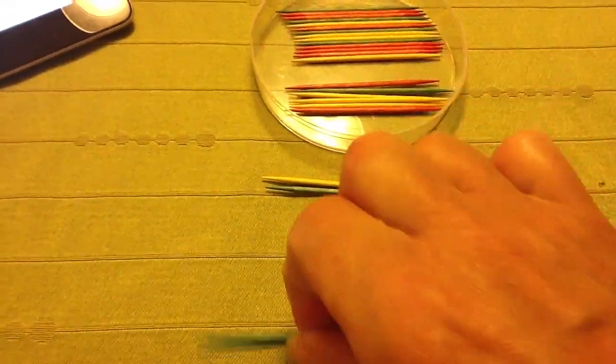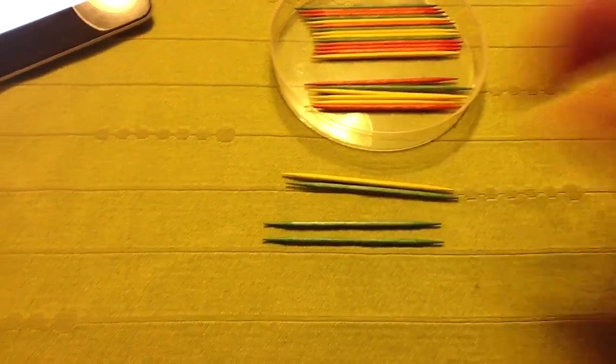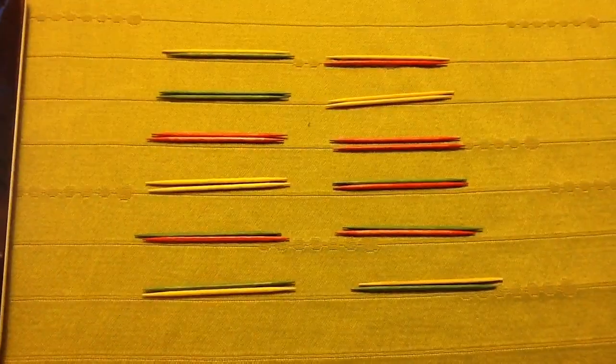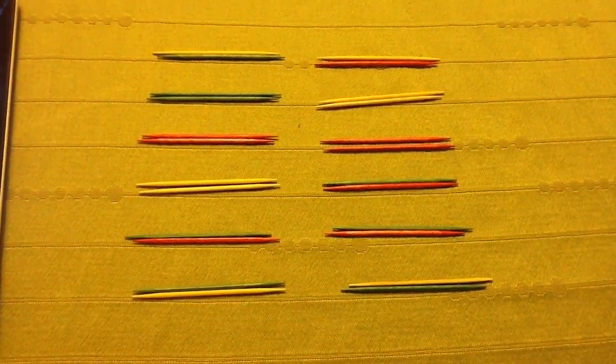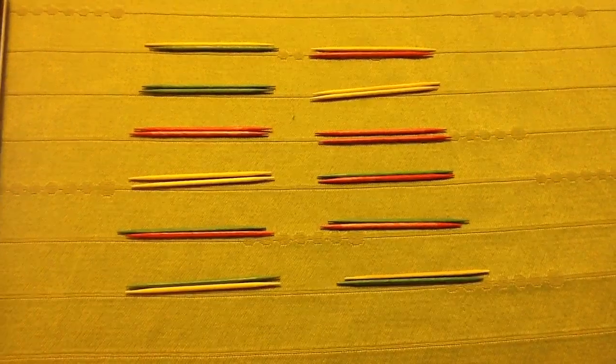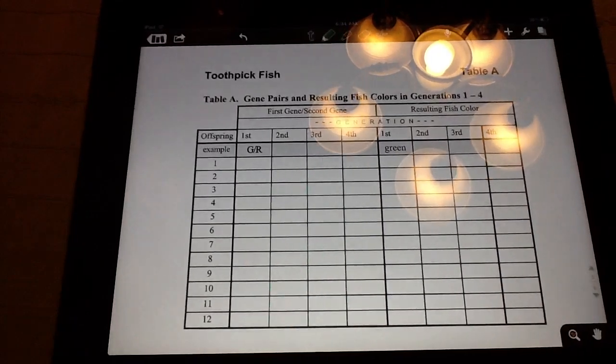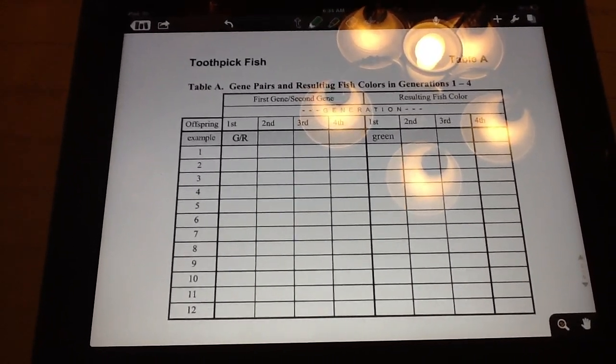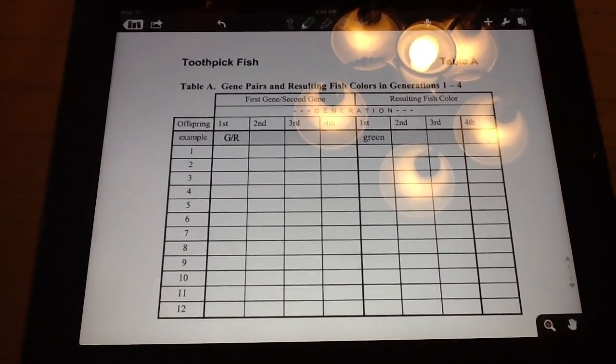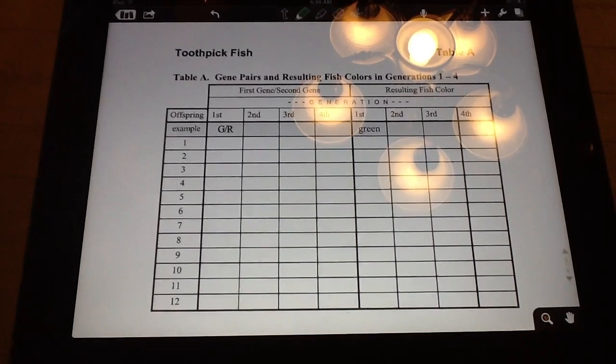Here's our random pairing of gene pairs, and what we're going to do is take this information and document it into our gene pair table A sheet. As you can see with the example, if we had a green gene and a red gene, we would put the GR right there.